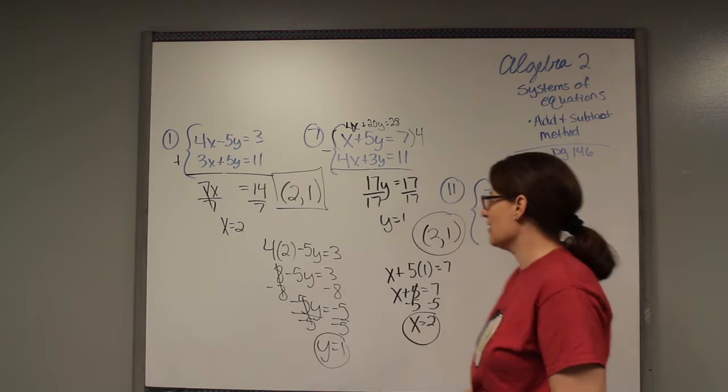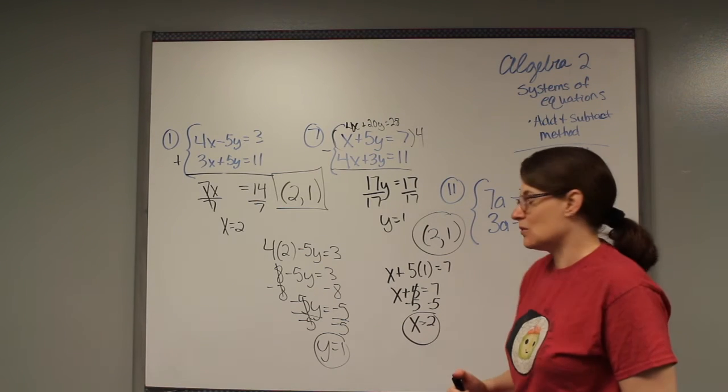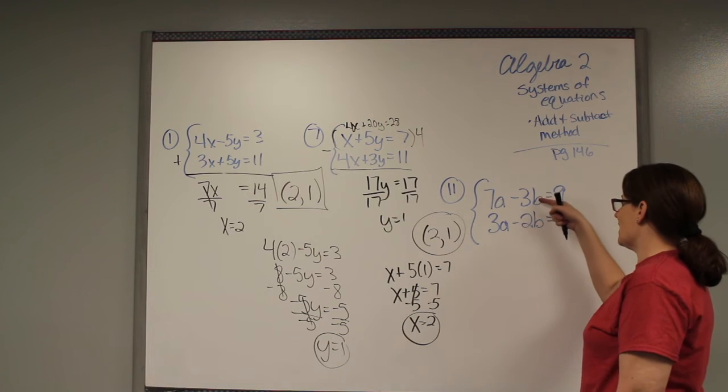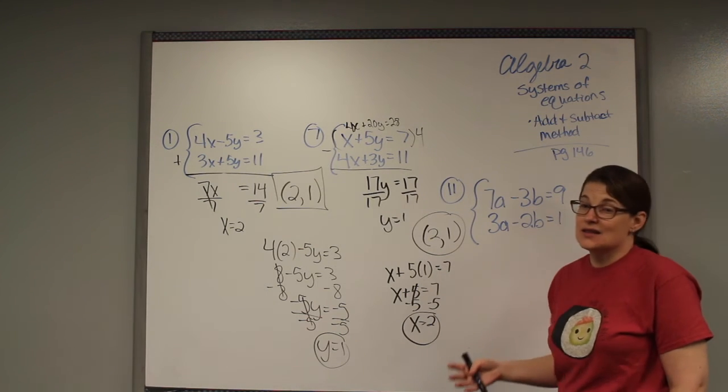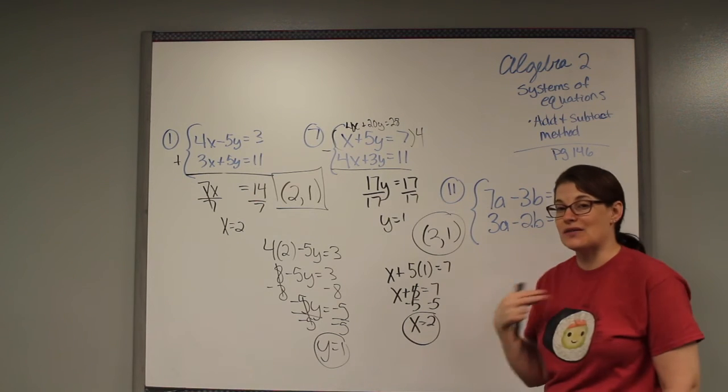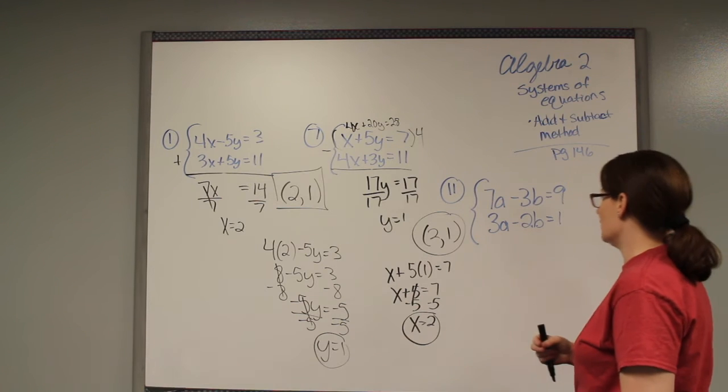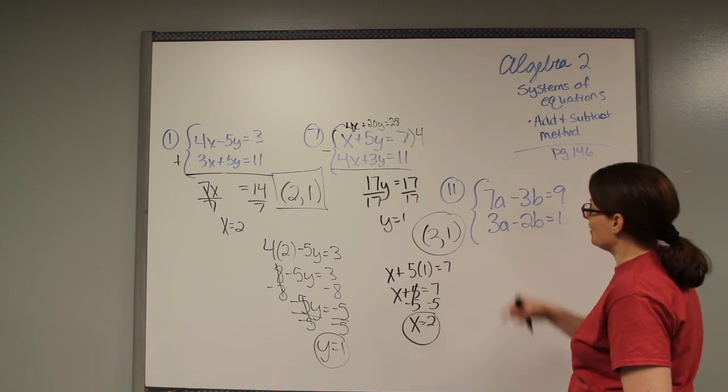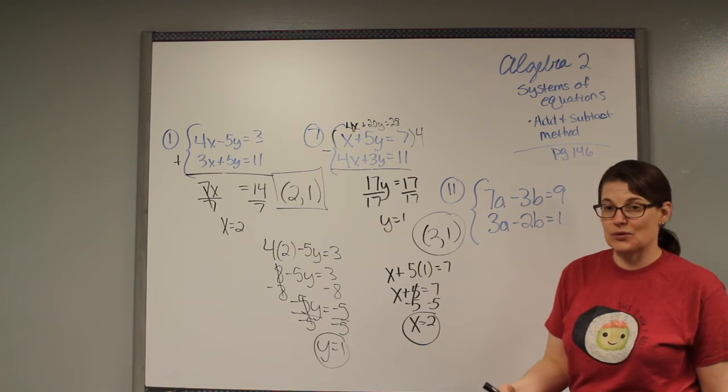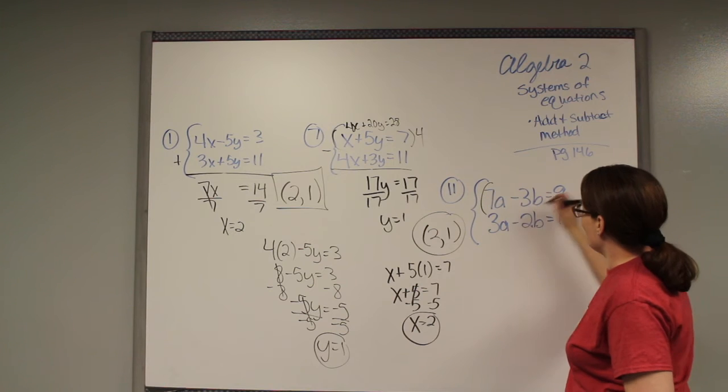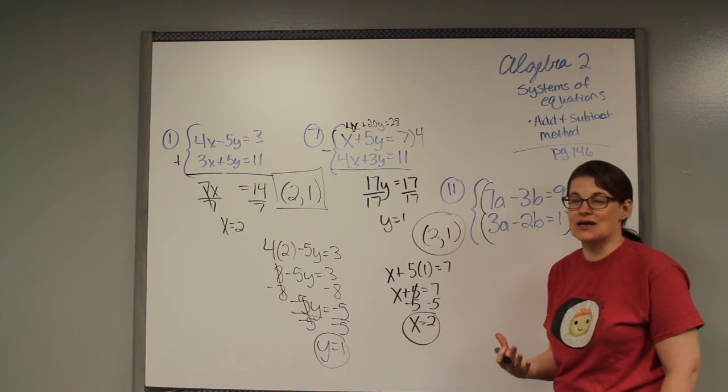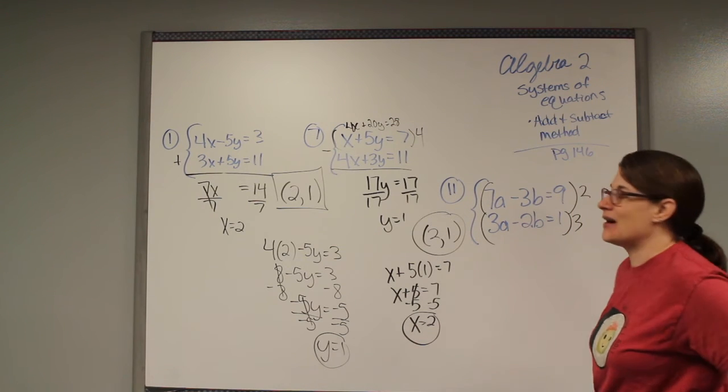11 is about as difficult as we're going to go today. I have a 7 and a 3, and a 3 and a 2. None of these match. In order to get them to match, I'm going to have to multiply and manipulate both equations. I don't want 21, that's too big. So I'm going to look at this 3 and 2, and the first number they both go into is 6. If I multiply this by 2, and I multiply this one by 3, these numbers will both be 6. It's kind of like finding a common denominator.